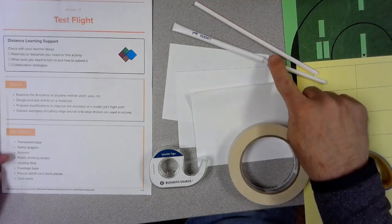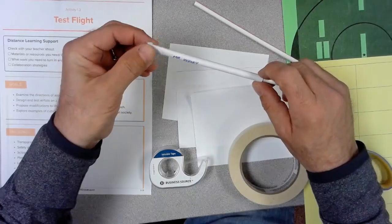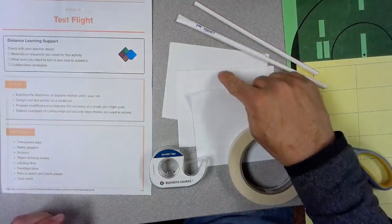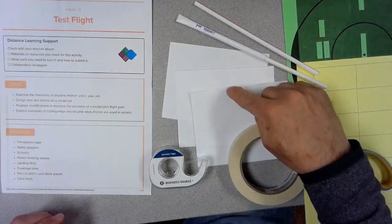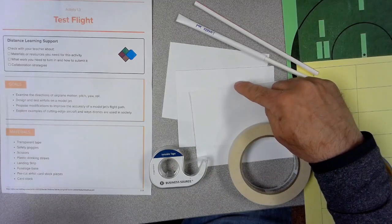You'll need your scissors again, you'll need your plastic straw, and if you have your fuselage still made you can reuse that. You may also need your remaining fuselage pieces of paper in case you need to make a new fuselage for doing additional prototypes.